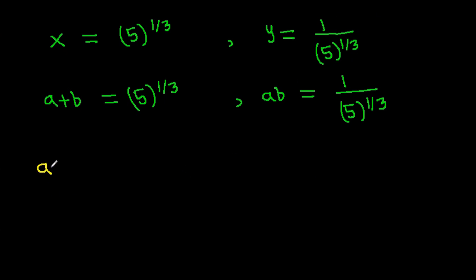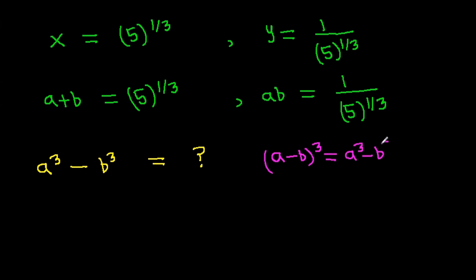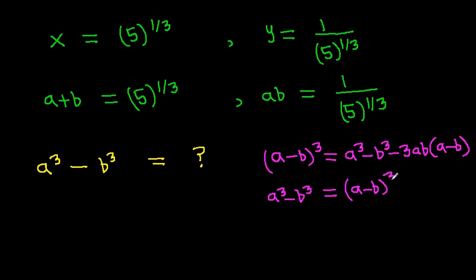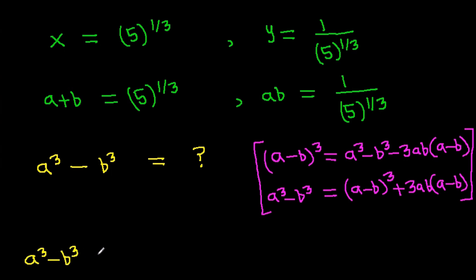Now we have to find the value of a cubed minus b cubed. We know that (a minus b)³ equals a cubed minus b cubed minus 3ab(a minus b). So a cubed minus b cubed equals (a minus b)³ plus 3ab(a minus b).